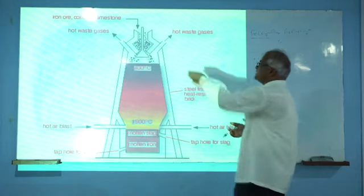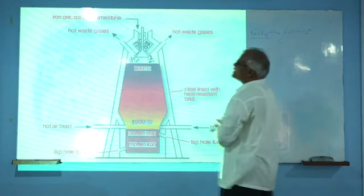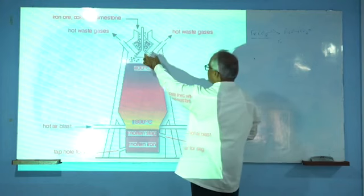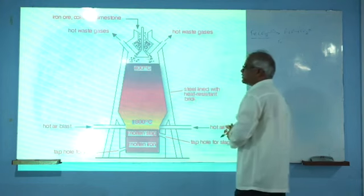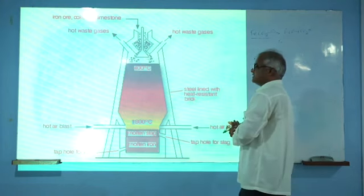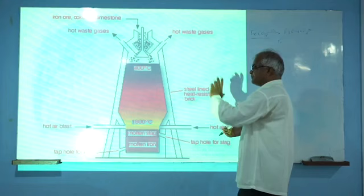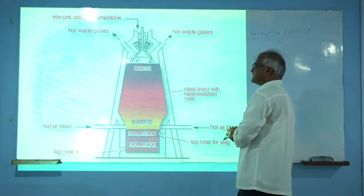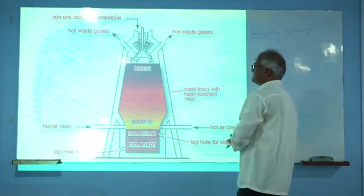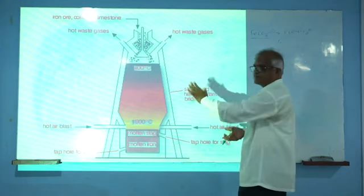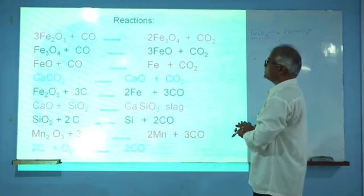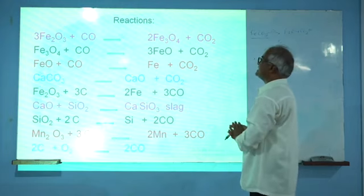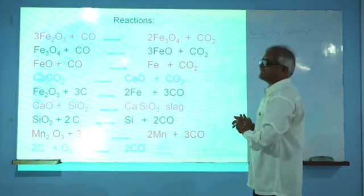The introducing mixture of iron ore, coke, and flux material — the temperature at the top of this furnace is 400 degrees Celsius. The study of the iron content has three zones.